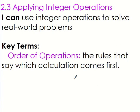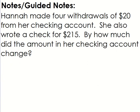Remember from 1.4, when we have story problems, we want to make sure we read it, highlight the important stuff. So Hannah made four withdrawals of $20 from her checking account. She also wrote a check for $215. By how much did the amount of her checking account change? Remember the question's always important because it tells us what they want us to do, how they want us to answer it. Do we need two parts, one part? Always important.